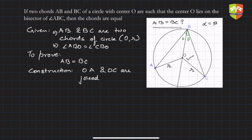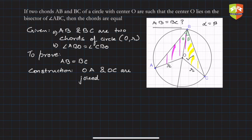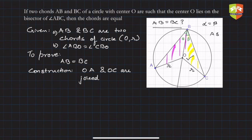The two triangles in question are triangle OAB and triangle OCB. One angle is common — alpha is equal to beta — and OB is the common side. Also, OA equals OC since they are the same radii. However, this gives us an ASS (angle-side-side) configuration, and there is no such congruence criterion. So we need to use some other approach to get to a conventional criteria.